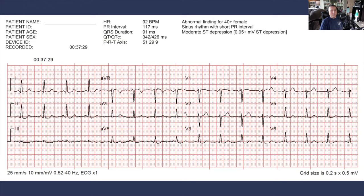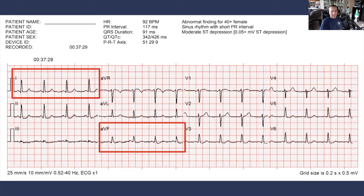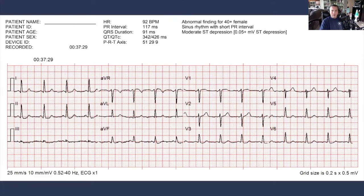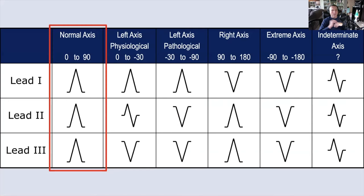Using the quadrant method here works just fine, because lead I is positive and lead AVF is positive, so we can prove we're somewhere in the left inferior quadrant. Using leads I, II, and III: lead I is positive, lead II is positive, lead III is equiphasic — the closest match puts us in the normal axis range of zero to 90 degrees. Not quite as satisfying as using the hexaxial reference system for this particular case, but it confirms the result.